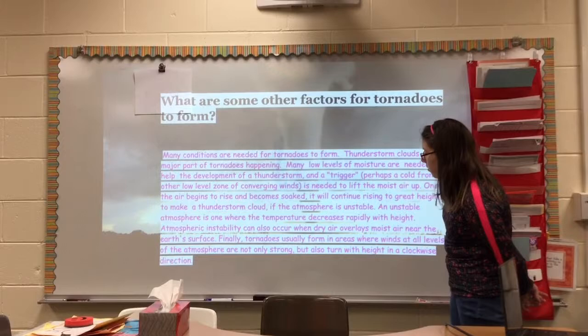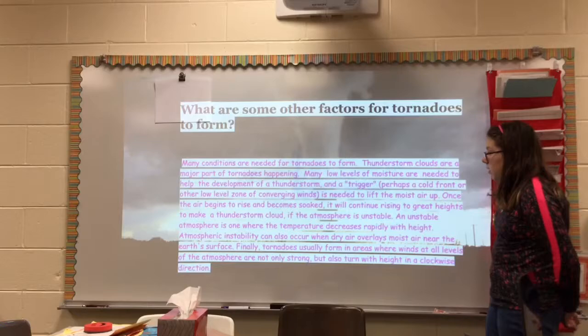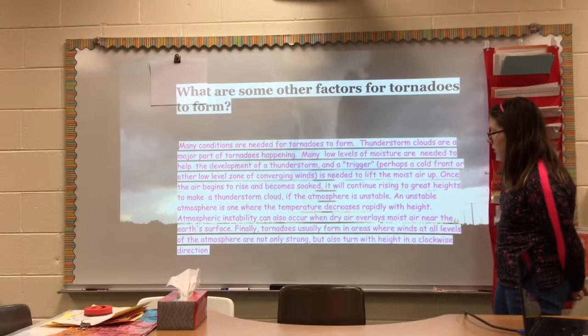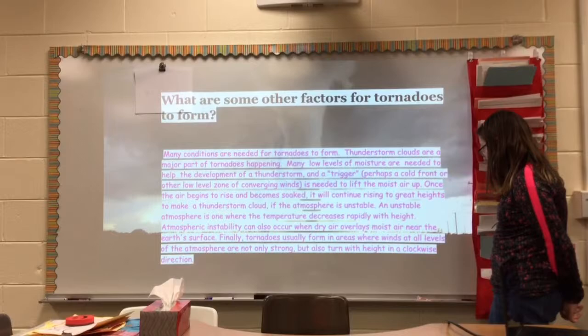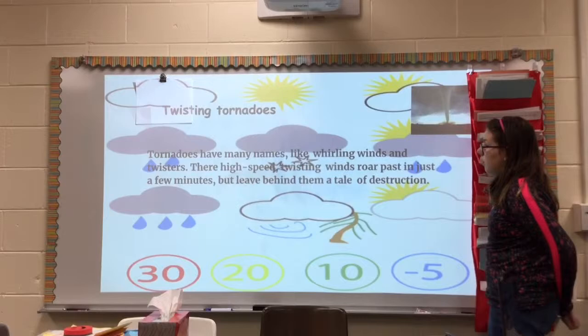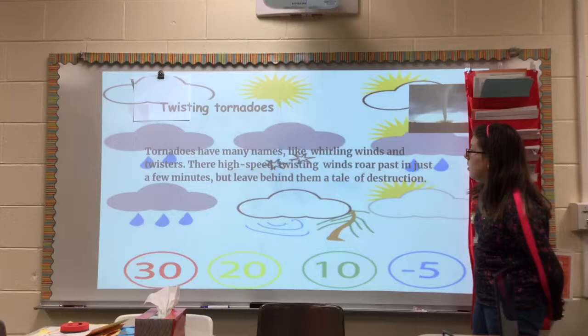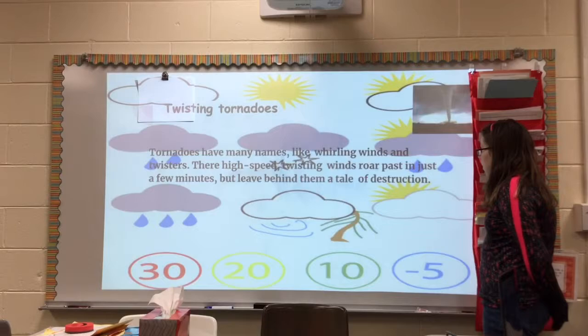Finally, tornadoes usually form in areas where winds at all levels of the atmosphere are not only strong, but also turn with height in a counterclockwise direction. Tornadoes have many names, like swirling winds and twisters. A high-speed twisting wind roars past in just 18 minutes, but leaves behind a trail of destruction.